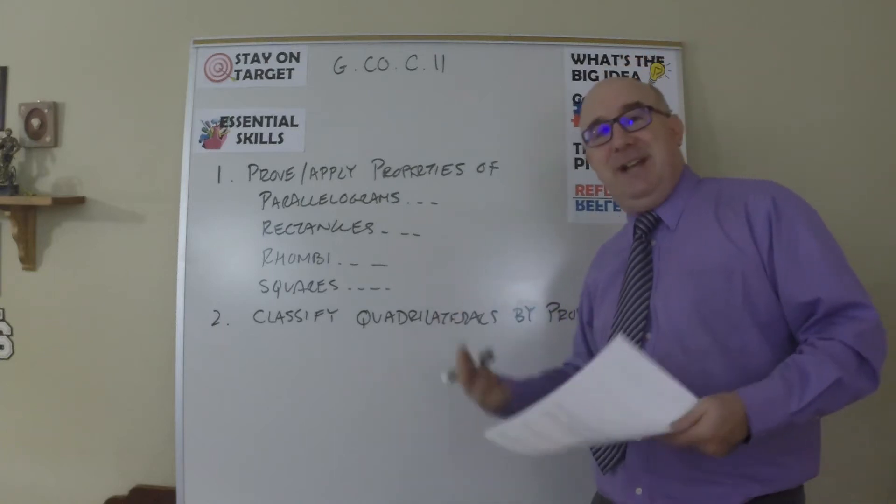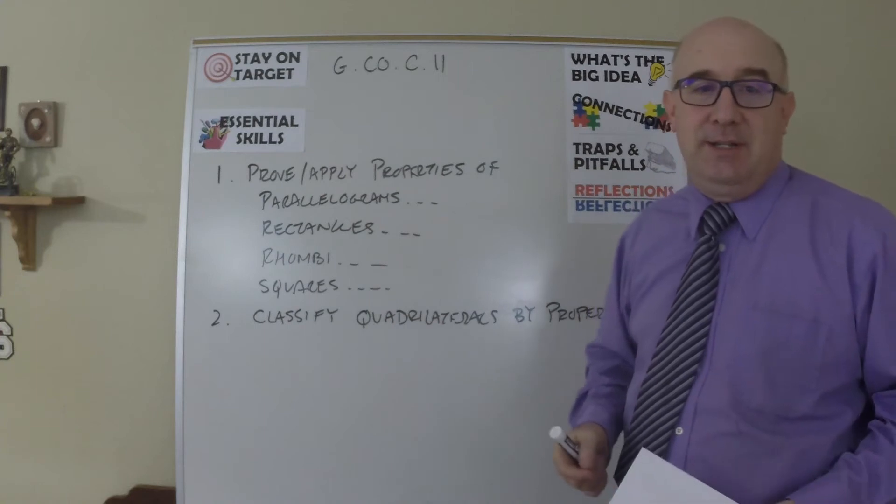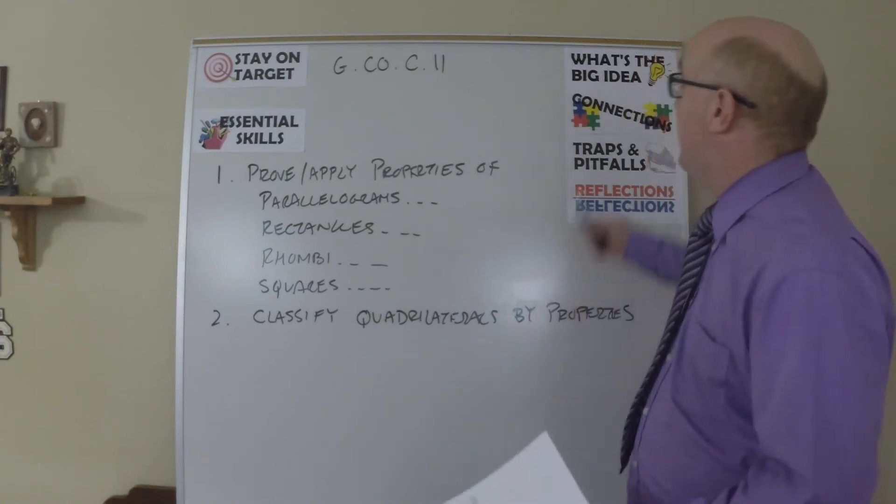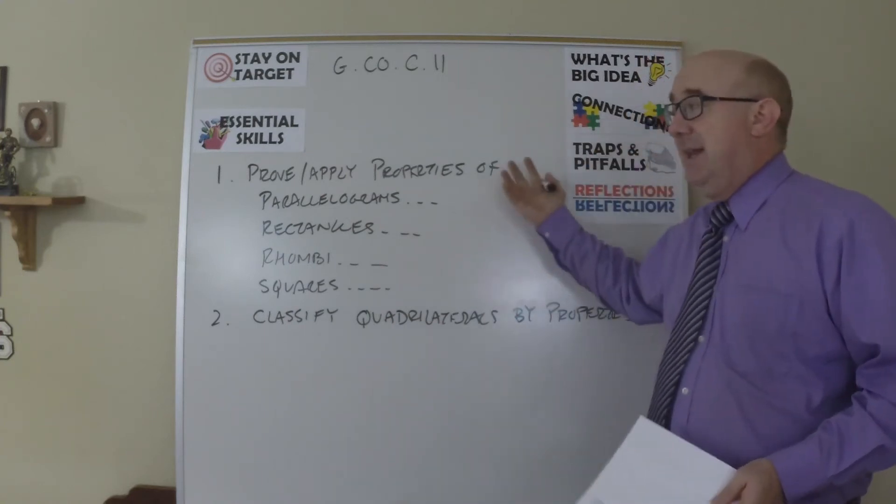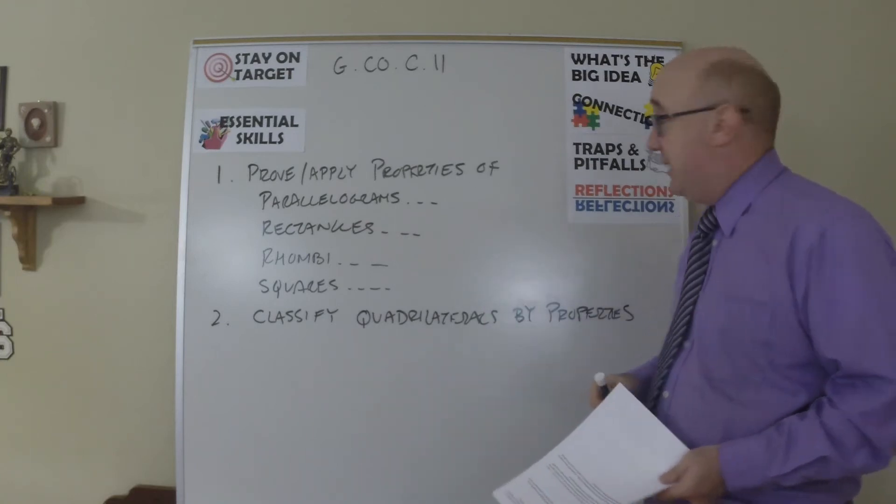What's the big idea? Inside of a quadrilateral is a triangle and we have properties and knowledge about triangles. So that's the connections back and the connections forward, of course, is using that congruence to help us out.